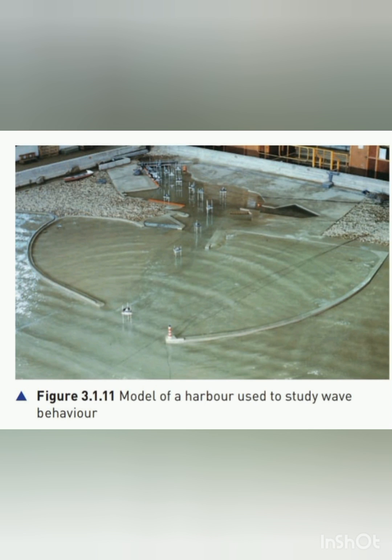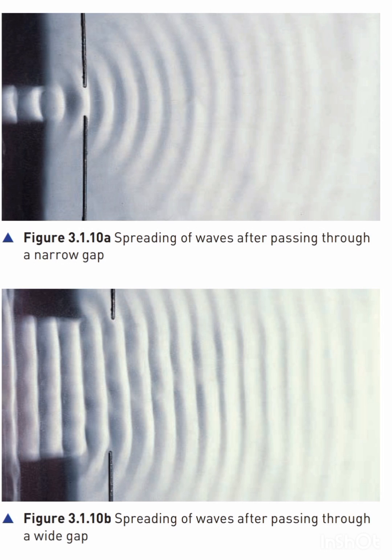When designing harbors, engineers use models like that in figure 3.1.11 to study these effects. Regarding the effects of wavelength and gap size on diffraction: in figure 3.1.10a the gap width is about the same as the wavelength of the wave, which is one centimeter.